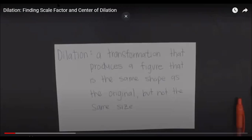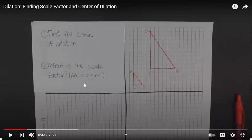Let's take an example of how we are going to draw dilations, how we are going to determine the center of dilation, and how we will calculate the scale factor. We have two different triangles in front of us — a smaller triangle and a larger one. The smaller one is the pre-image and the larger one is the image. The vertices are labeled A and A', B and B', C and C'. Since we have two different sizes with the same shape, this is a dilation.